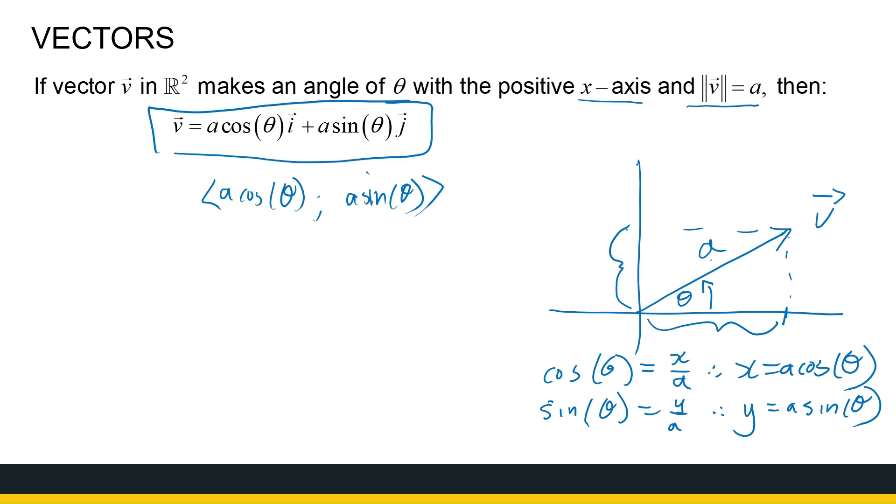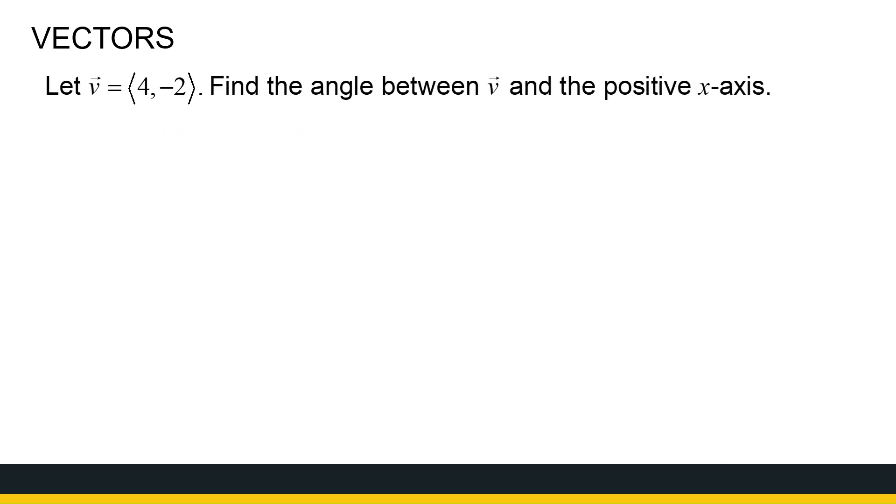So, let's then take a look. If I've got the vector 4 minus 2, find the angle between v and the positive x-axis. So, let's just see where this vector is. 4 in the x-direction, minus 2 in the y-direction. So, it's going in this direction. So, I already suspect this angle is going to be a negative angle because I've got a 4 there and a minus 2.